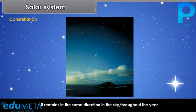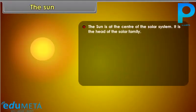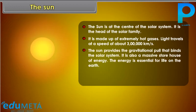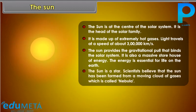The Sun is at the center of the solar system. It is the head of the solar family and is made up of extremely hot gases. Light travels at a speed of about 3 lakh kilometers per second. The Sun provides the gravitational pull that binds the solar system. It is also a massive storehouse of energy, which is essential for life on the Earth. The Sun is a star. Scientists believe that the Sun has been formed from a moving cloud of gases called a nebula.